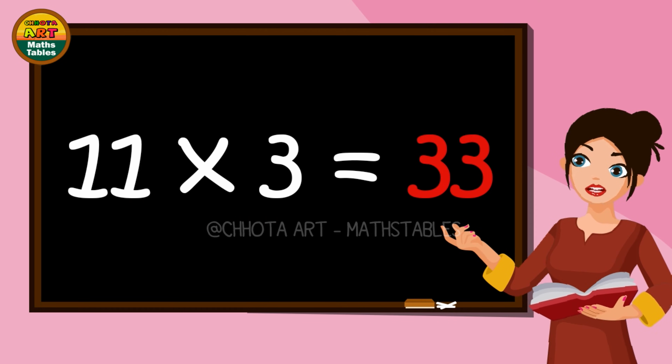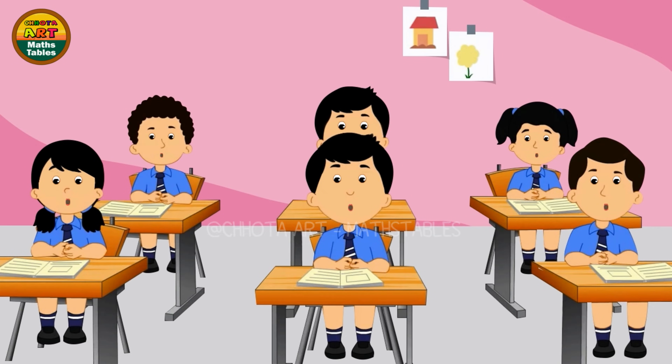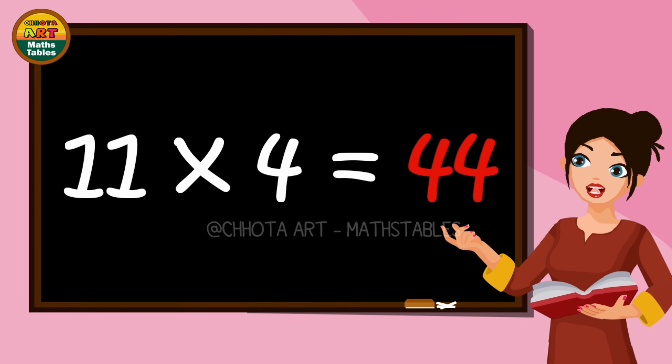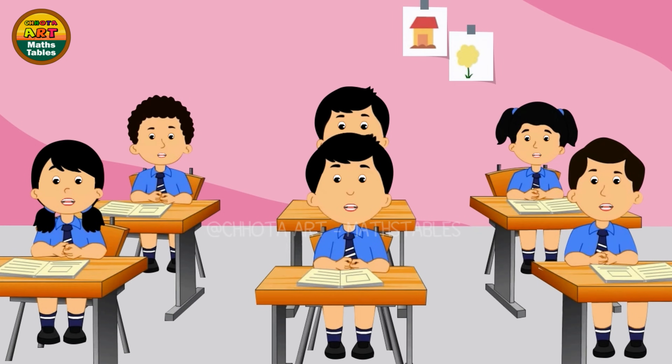Eleven threes are thirty-three. Eleven threes are thirty-three. Eleven fours are forty-four.